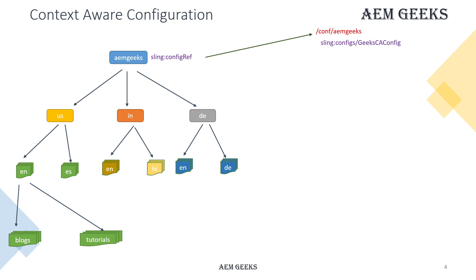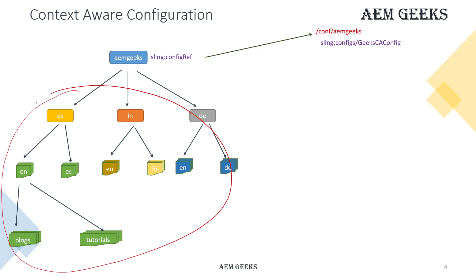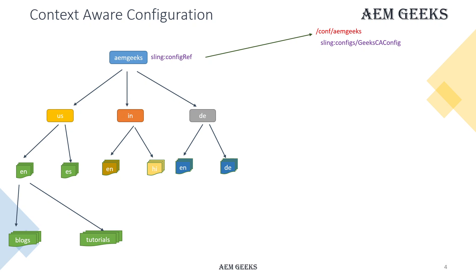This configuration is used in a component that is used on pages throughout my site. So wherever I use that component, it will start picking values from this configuration. Not only components — you can use this in any back-end module. I'm just giving a component as an example.